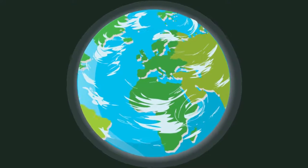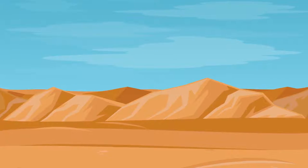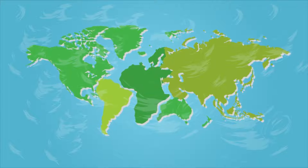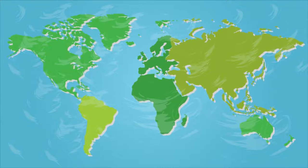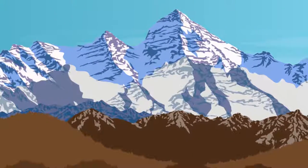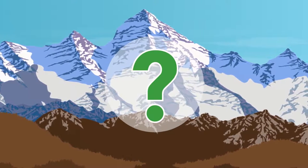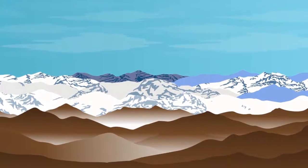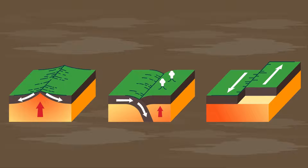Earth's surface consists of various geographical features whose origin has been explained by the popular plate tectonics theory. This theory states that tectonic plates in the outer layer of Earth's surface collided with each other, resulting in distinct features. However, this theory does not adequately explain the origin of the Tibetan plateau, which has long been unclear to geologists. This is because this region consists of complex geological structures, which cannot be explained by a single tectonic event of collision and compression.